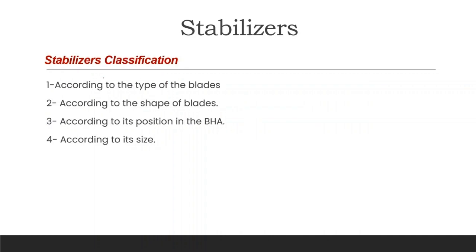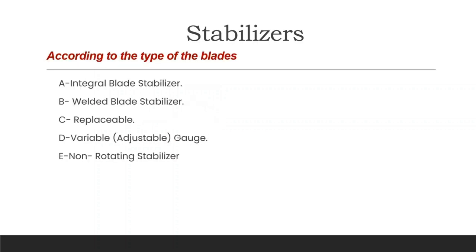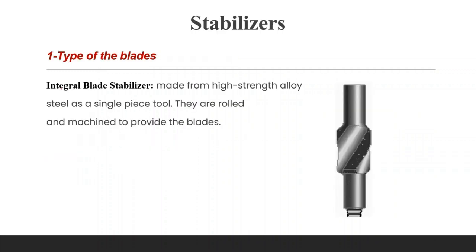Stabilizer classification: We can classify stabilizers according to the type of blades, the shape of blades, the position in the BHA, and the size. According to the type of blades, we can classify stabilizers into: integral blades, welded blades, replaceable, variable or adjustable gauge, and non-rotating stabilizers.